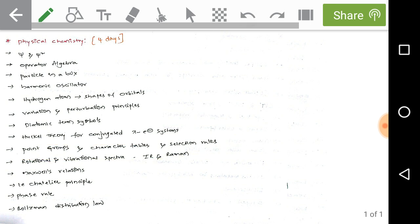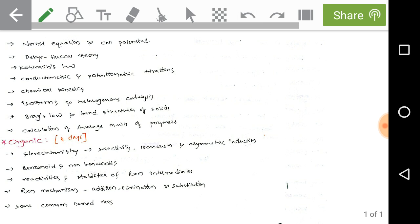Next, thermodynamic term symbols, Huckel theory for conjugated pi systems, point groups, character tables and selection rules. Rotational-vibrational spectra and IR and Raman spectra of diatomic molecules. Maxwell relations, Le Chatelier principle, phase rule, Boltzmann distribution, Nernst equation. Cell potential determination, Debye-Huckel theory, Kohlrausch law, conductometric and potentiometric titrations. Chemical kinetics topic is very important. Just check the topics of it.